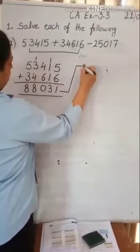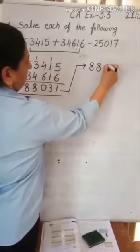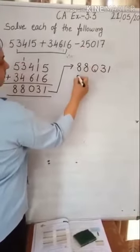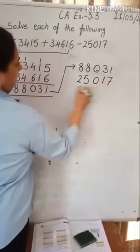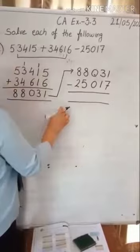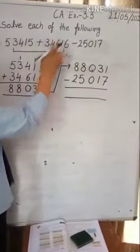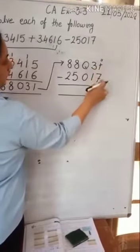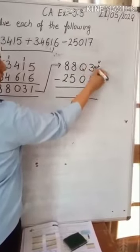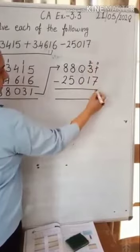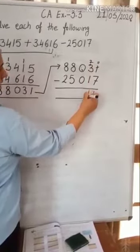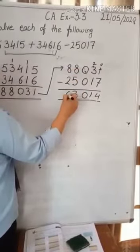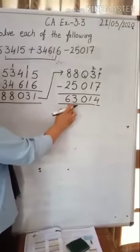Now we will subtract 25,017 from 88,031. We can't subtract 7 from 1, so we will do borrowing. 11 minus 7 is 4. 2 minus 1 is 1. 0 minus 0 is 0. 8 minus 5 is 3. 8 minus 2 is 6. Our answer is 63,014.